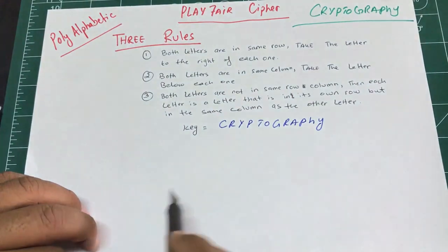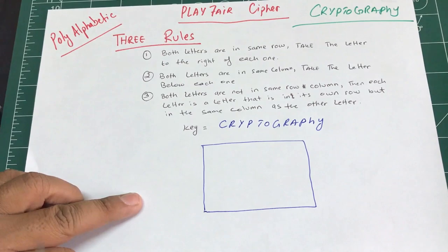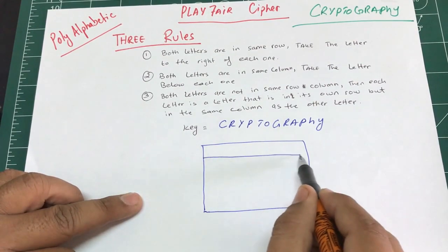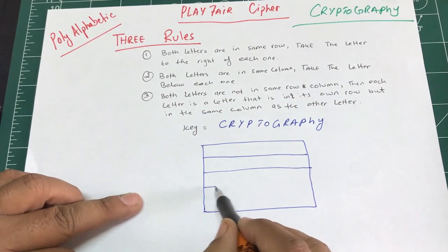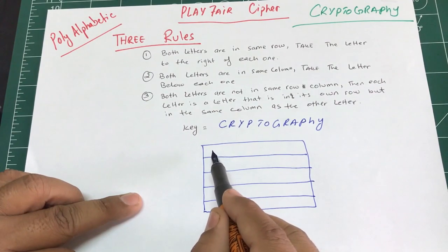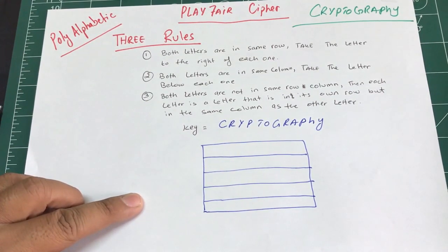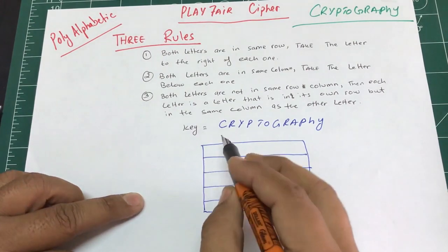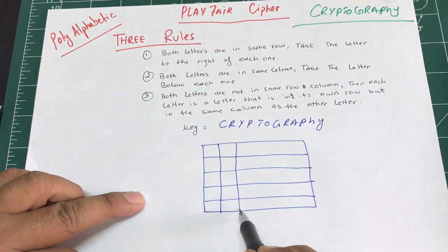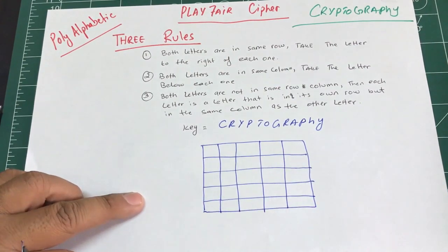First, I'm going to make a 5x5 matrix. I'll write all the letters in it — one, two, three, four, five columns and five rows. Why a 5x5 matrix? Because in the English language we have 26 letters, and we're going to combine two of them.